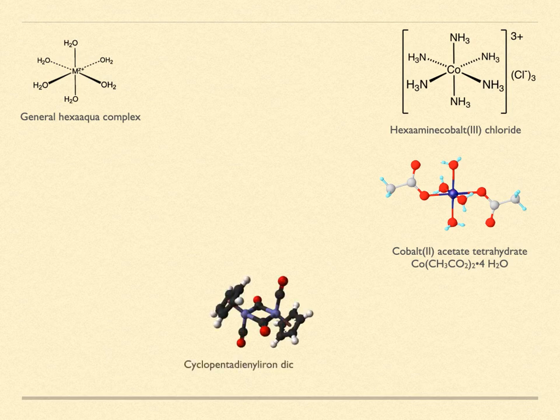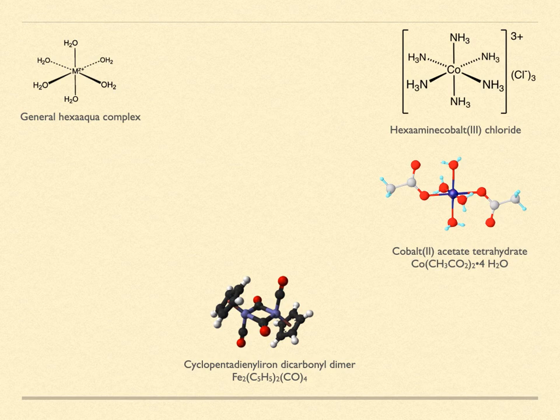Another common ligand is the cyclopentadienyl ion, which forms bonds through the electrons in its aromatic ring structure. Here is an example involving a central dimer of two iron ions along with two cyclopentadienyl ions and four carbon monoxide molecules. Ligands such as water and ammonia which are only able to form one bond are called monodentate. The field is very broad and we could spend a lot of time just studying them.